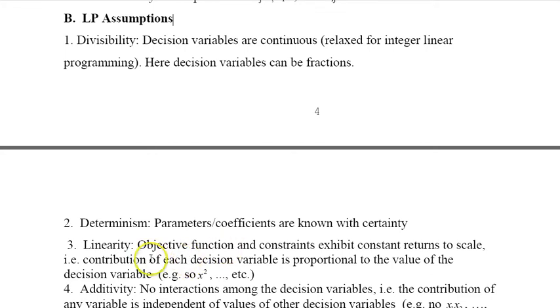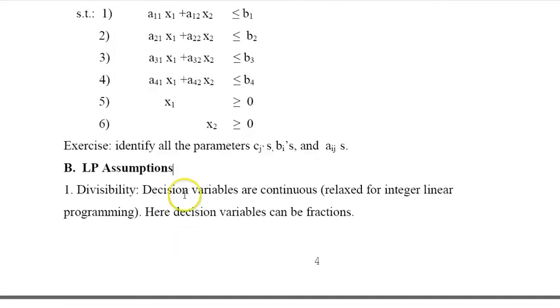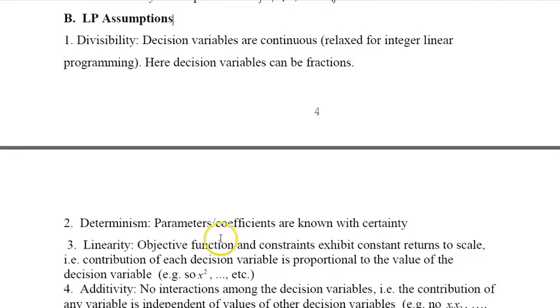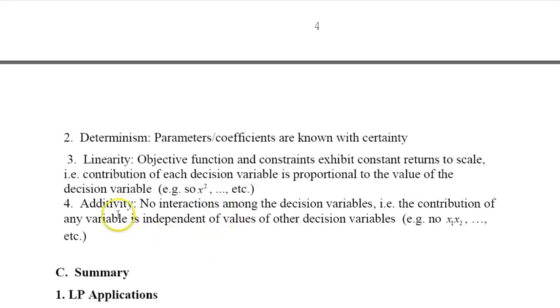The third assumption is linearity. The objective function and the constraints exhibit constant returns to scale, which means I don't have in my variables any terms like x squared. So if I look at my model, I don't have x1 squared or x2 cubed or log x or exponential of x and so on. So everything is linear.